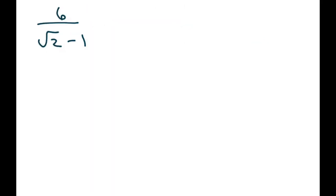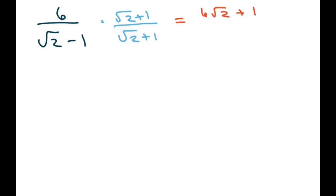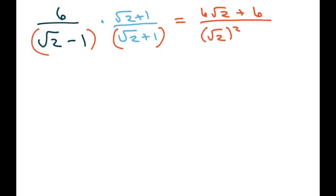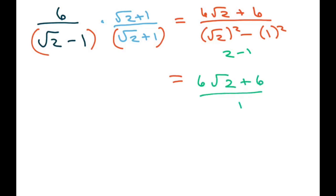The next one is very similar. Our conjugate is going to be square root of 2 plus 1 — you're just changing the sign. Notice we're getting rid of the radicals in the denominator. So our numerator is just going to be 6 square root of 2 plus 6. The denominator, multiplied out, is going to be a squared minus 1, so the denominator is just 2 minus 1, which is 1. Our final answer is 6 square root of 2 plus 6 over 1, and you really don't need to write it over 1.